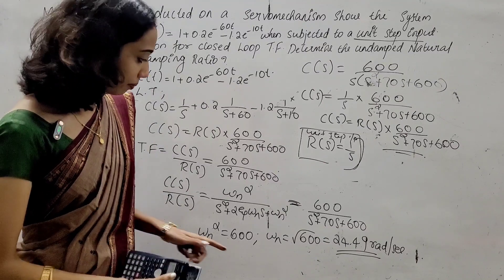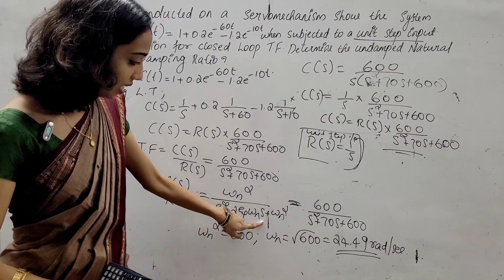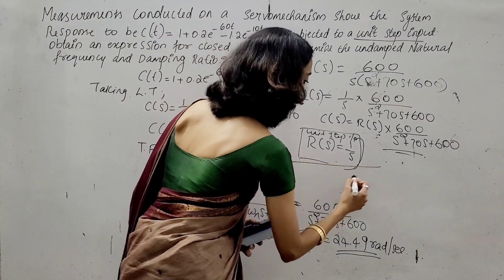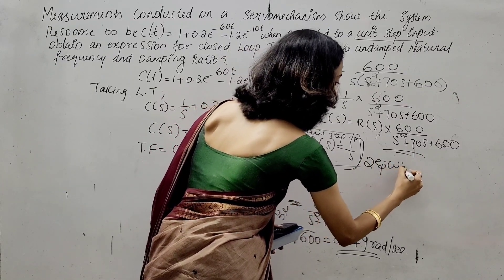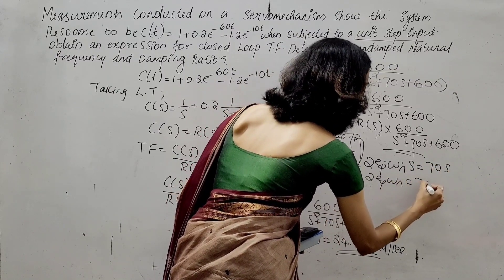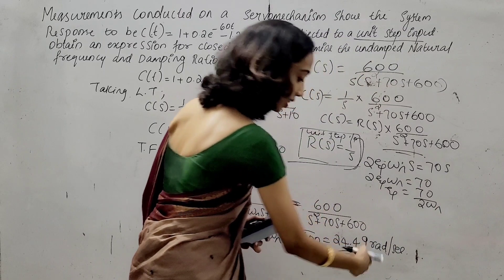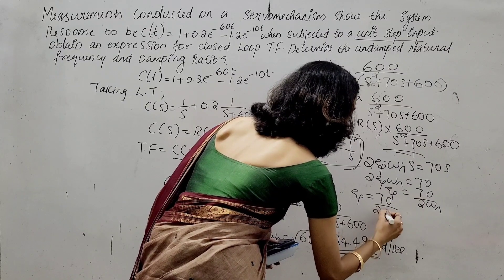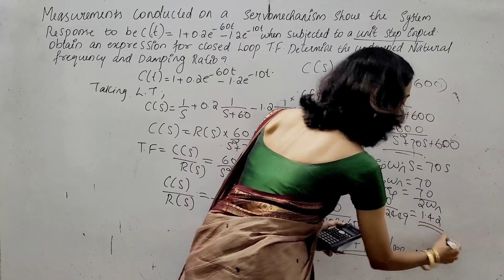Now for the damping ratio zeta: comparing the S coefficient, 2ζω_n = 70, so ζ = 70 / (2 × 24.49) = 1.42.